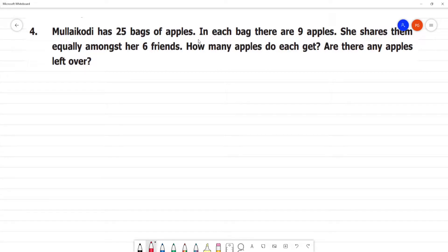Mullaikodi has 25 bags of apples. In each bag there are 9 apples. First, number of bags is equal to 25. Number of apples in each bag is equal to 9.